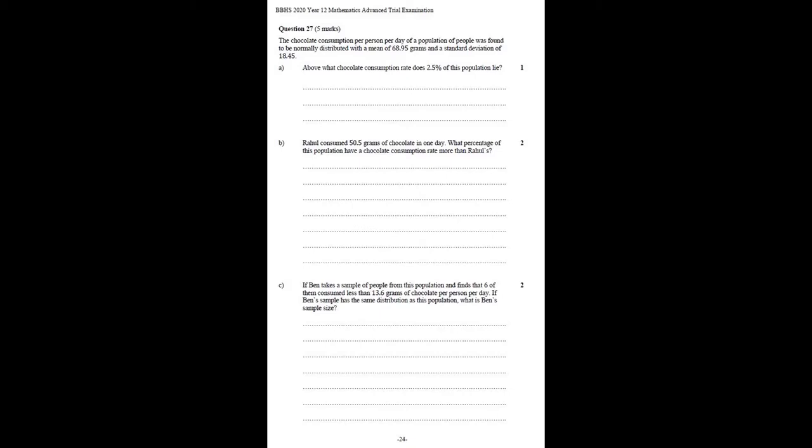The question tells us that the chocolate consumption per person per day of a population of people was found to be normally distributed with a mean of 68.95 grams and a standard deviation of 18.45. So there's three parts to the question.